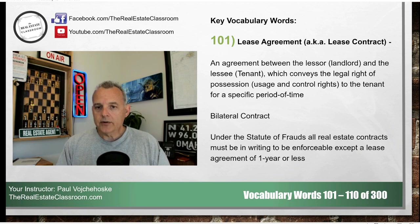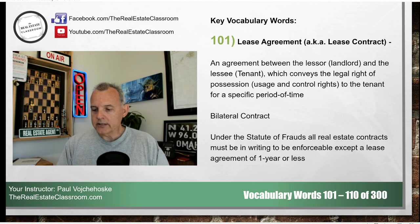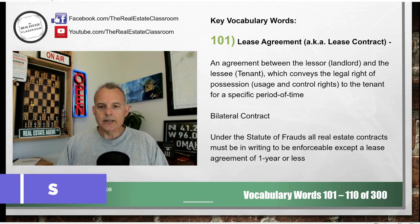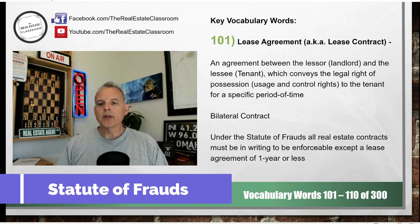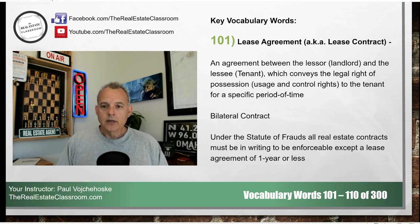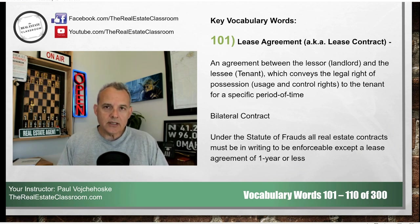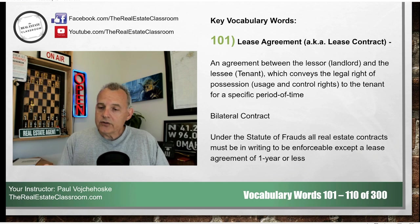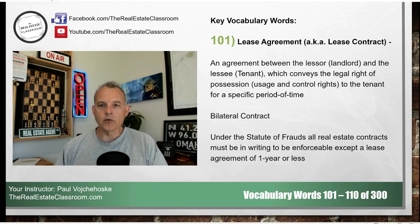A lease agreement is a bilateral contract, which means that once it's agreed to by the landlord and the tenant, the terms of that contract are enforceable by both parties. Under the statute of frauds, all real estate contracts to be enforceable must be in writing, with one exception: a residential lease contract of one year or less can be verbal and still be enforceable. But if it's more than one year, even if it's residential, it must be in writing to be enforceable.